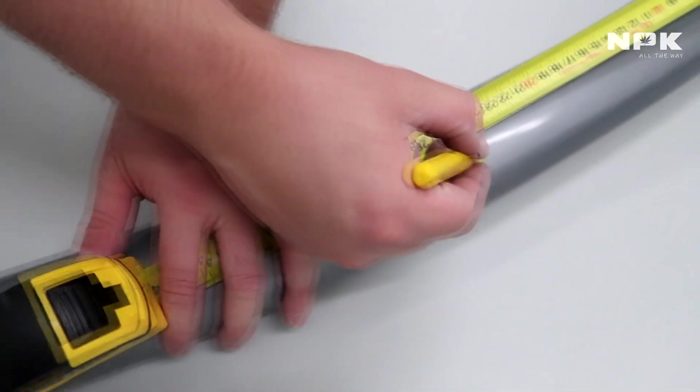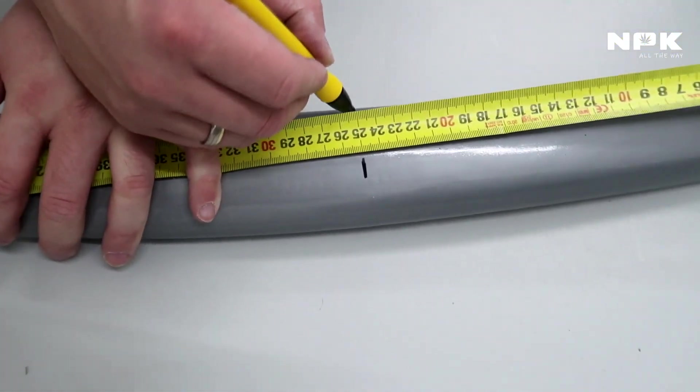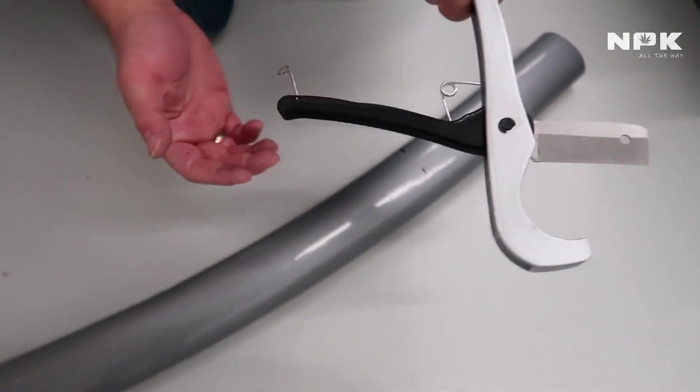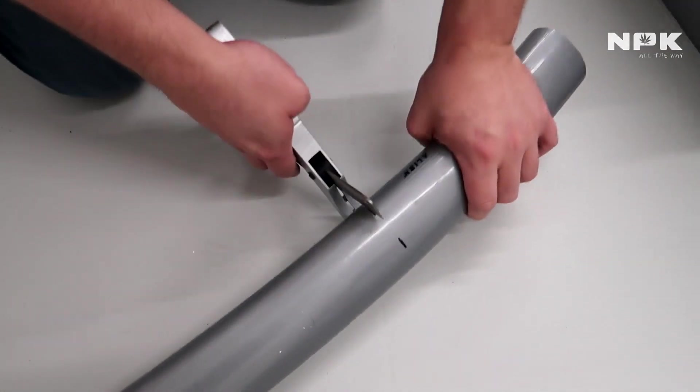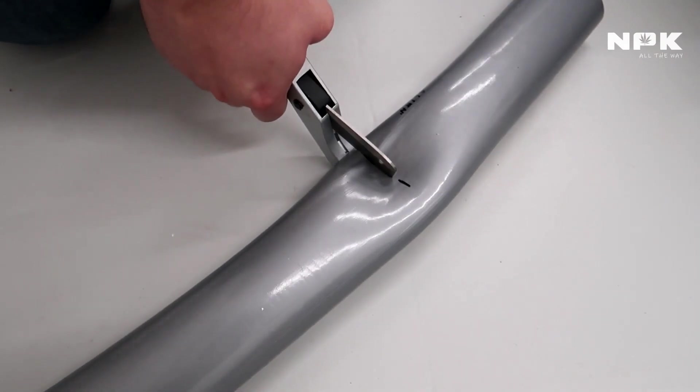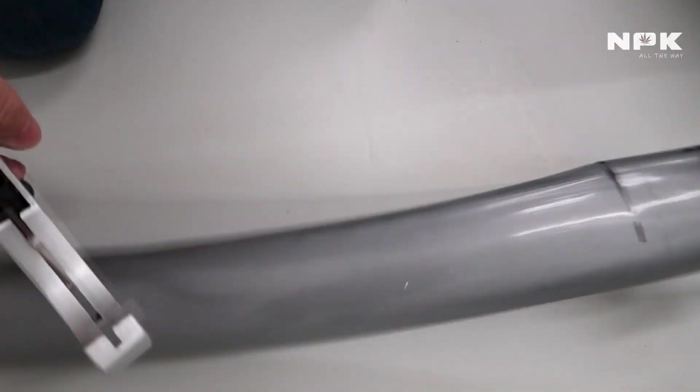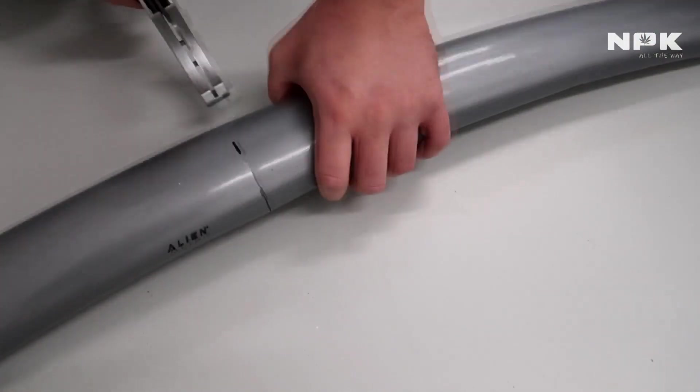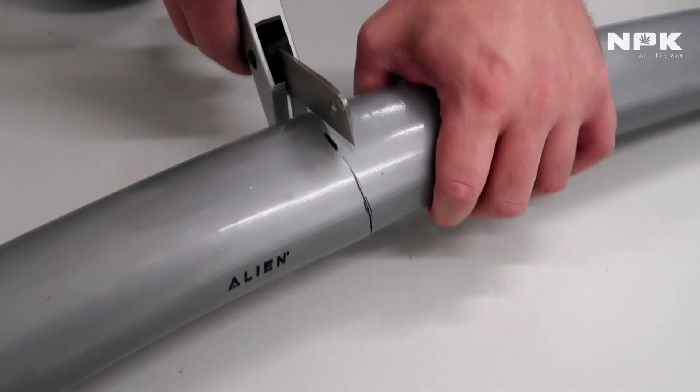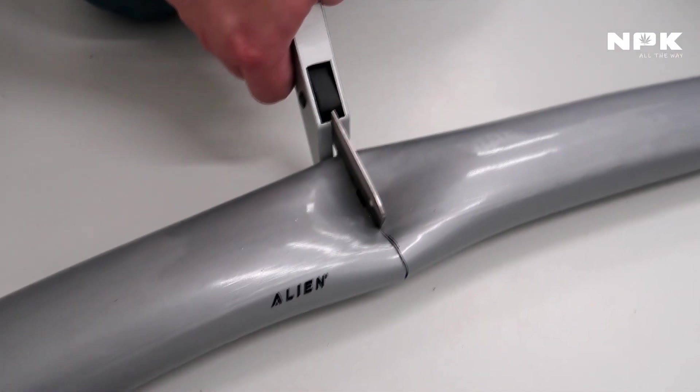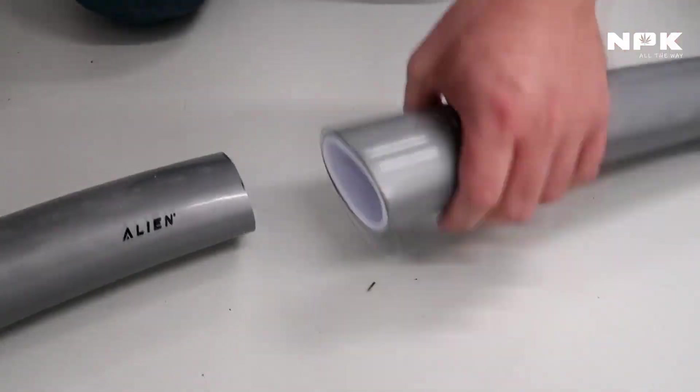You start off by measuring the desired length you want, and then you get your scissors that come with the set. It's very easy to cut through them. Just turn around and make sure that you cut evenly. The scissors is a little bit too small in my opinion to cut in one way through it, that's why I did it in two settings, but no big deal.